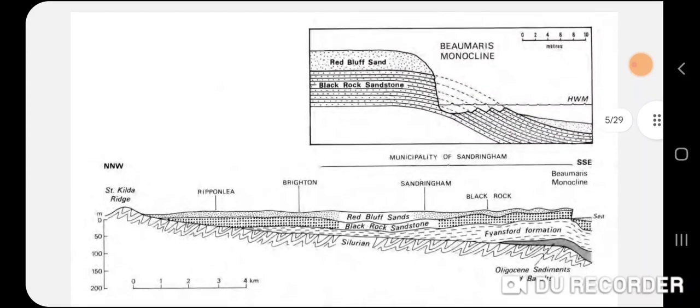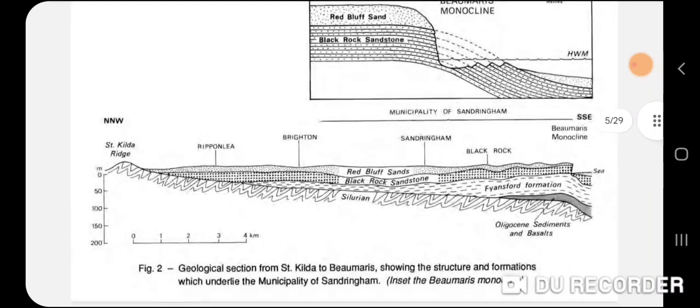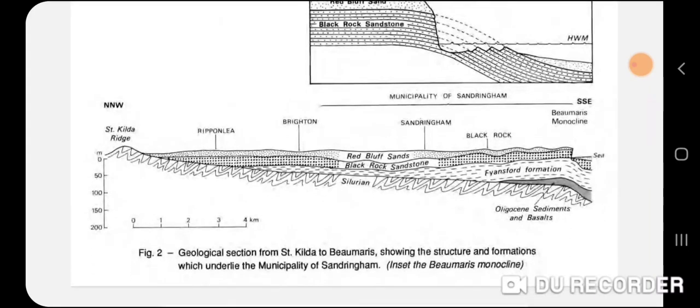Here we have a map showing the Red Bluff Sand and the Barrow-Balmorris monocline — it's been down-warped or lifted up on one side. The Black Rock Sandstone as you can see has both been eroded quite a lot. The Black Rock Sandstone has a lot of fossil fauna, whereas the Red Bluff doesn't really have that many fossils.